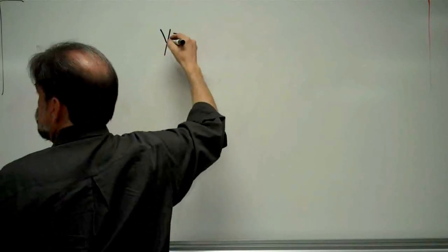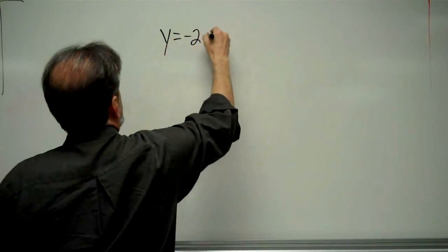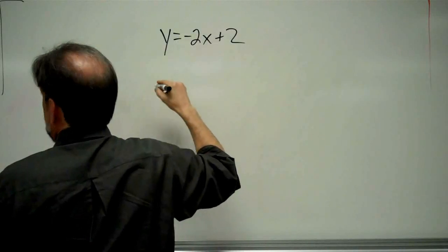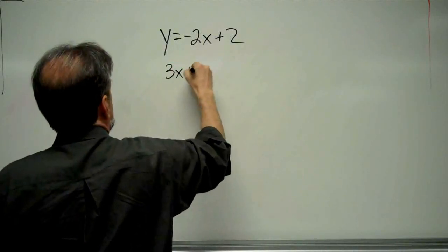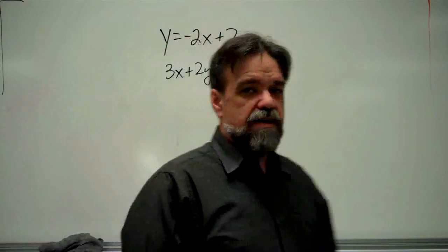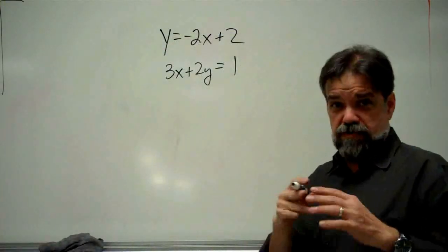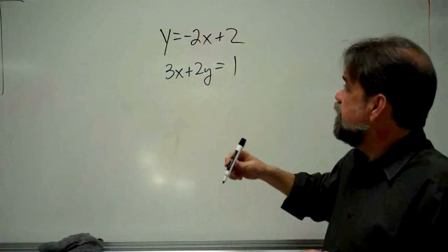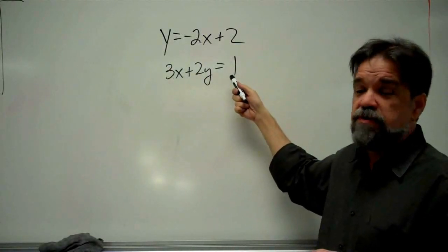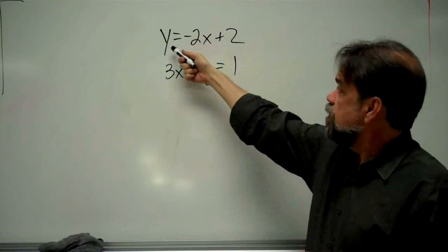This time, we have y equals negative 2x plus 2. And 3x plus 2y equals 1. All right. Now, you've already noticed what's different about this one. And that is, this line right here is not written in slope-intercept form. This one is. It's solved for y. y equals mx. My slope is negative 2. My y-intercept is the point (0,2).